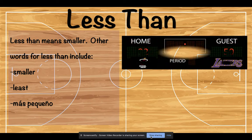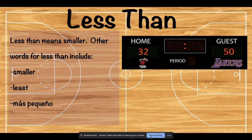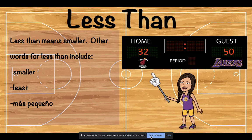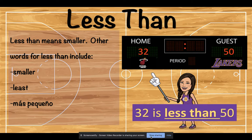For example, on this scoreboard, the Miami Heat has a score of 32, and the Lakers have a score of 50. So who has a smaller score? That's right. The Heat does. So how would we read this? We would say 32 is less than 50. Good job.